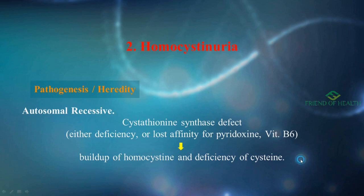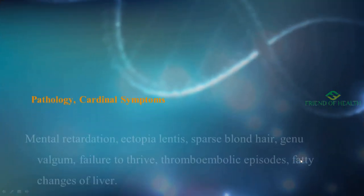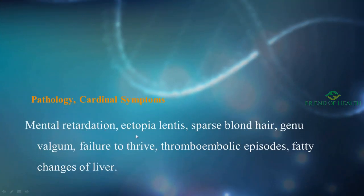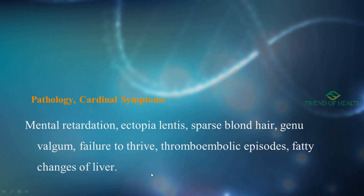The cardinal symptoms of homocystinuria are: mental retardation, ectopia lentis (very important), sparse blonde hair, genu valgum, failure to thrive, thromboembolic episodes, and fatty changes of the liver. These are the key features you need to know for homocystinuria.